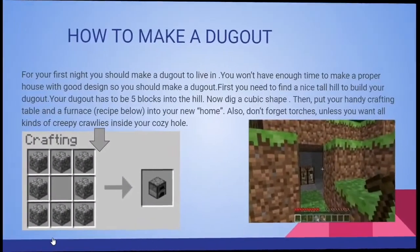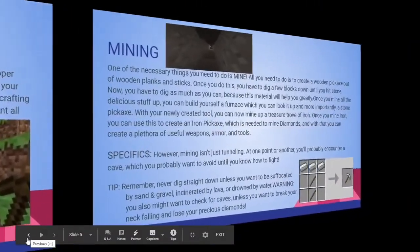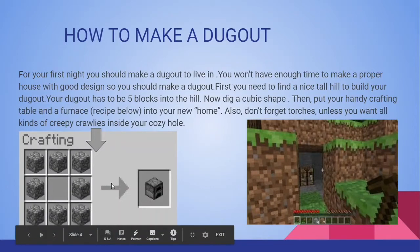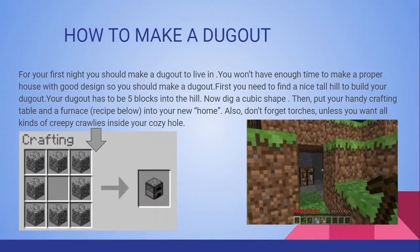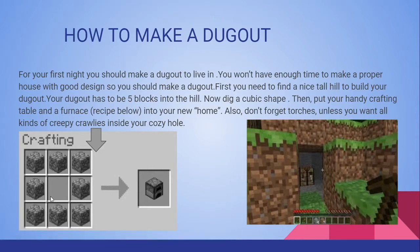How to make a dugout. 'How to make a house with good design: So you should make a dugout first. You need to find a nice tall hill to build your dugout. Your dugout has to be five blocks into the hill. Now dig in a cubic shape, then put your handy crafting table and furnace into your new home. Also don't forget torches, unless you want all kinds of creepy crawlies inside of your cozy hole.' Who wrote this?